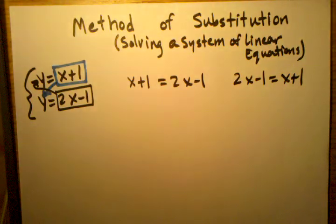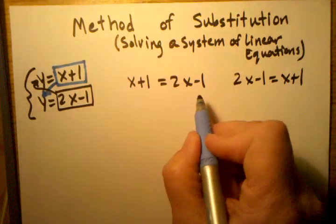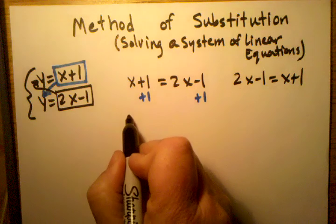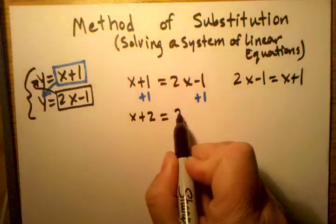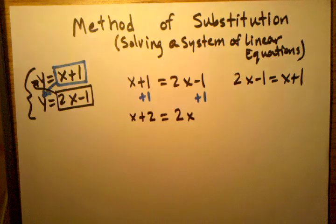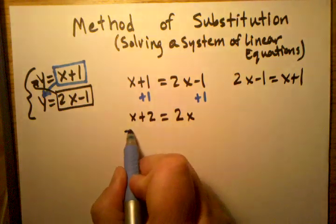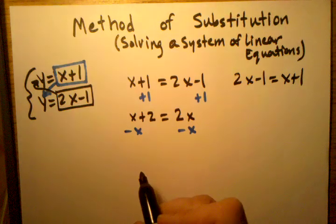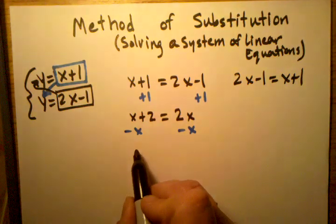So now I just use my balancing techniques. I'm first going to add 1 to both sides. When I do that, I'll have x plus 2 equals 2x. Then I'm going to subtract x from both sides. Remember, whatever I do to one side, I do the other side.